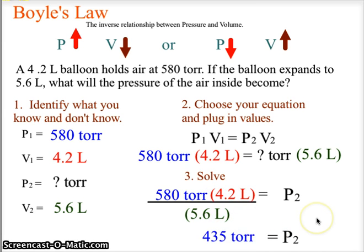We will end up with a torr value of 435 torr, 435 torr of pressure.